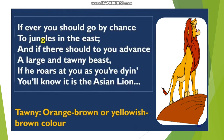As you must have seen the Asian lion in pictures or at a zoo, its skin color is tawny. So she is saying that if you ever got a chance to visit a jungle in the east, and a large and tawny beast is approaching you, if he roars at you as you are dying — it is so horrifying, so terrifying — you will know it is the Asian lion. So this is how she is describing the Asian lion in this stanza.